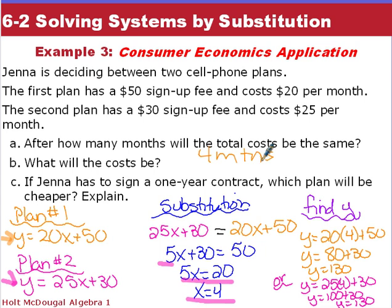Now we have to find y, and y is going to be how much the cost will be. So we can substitute 4 for our x into both of the equations and see, and when doing that, we get y to be $130 for both of them, which is great. They should be the same cost in each of those equations. So the cost is going to be $130.